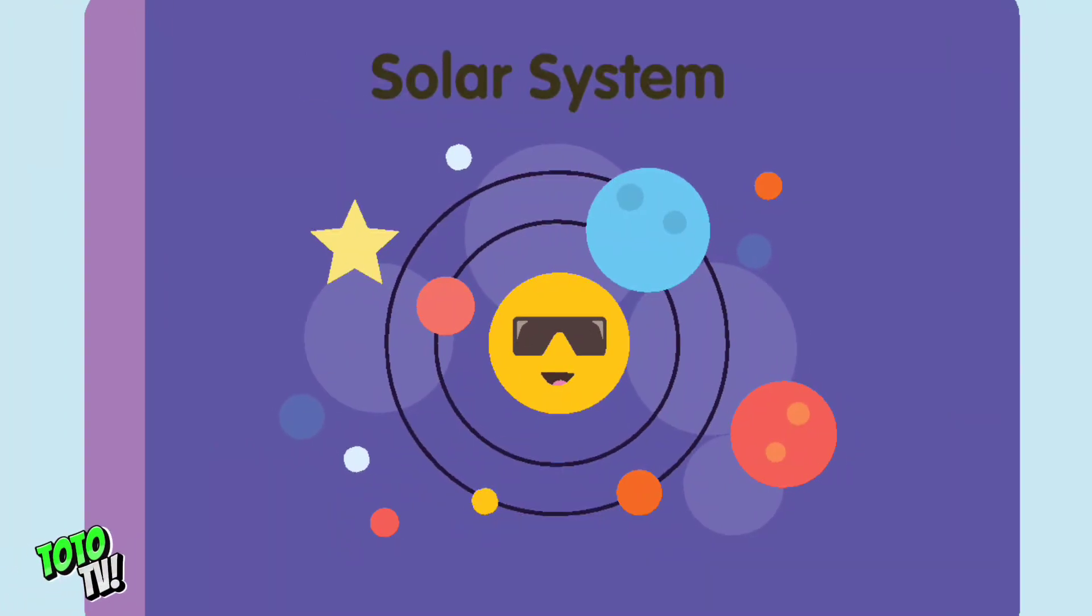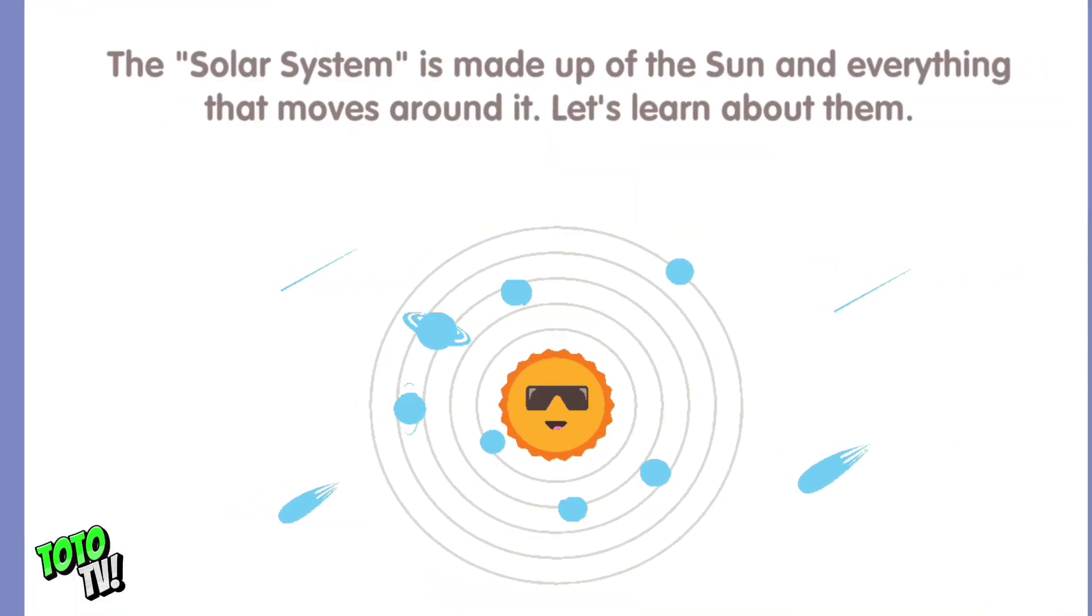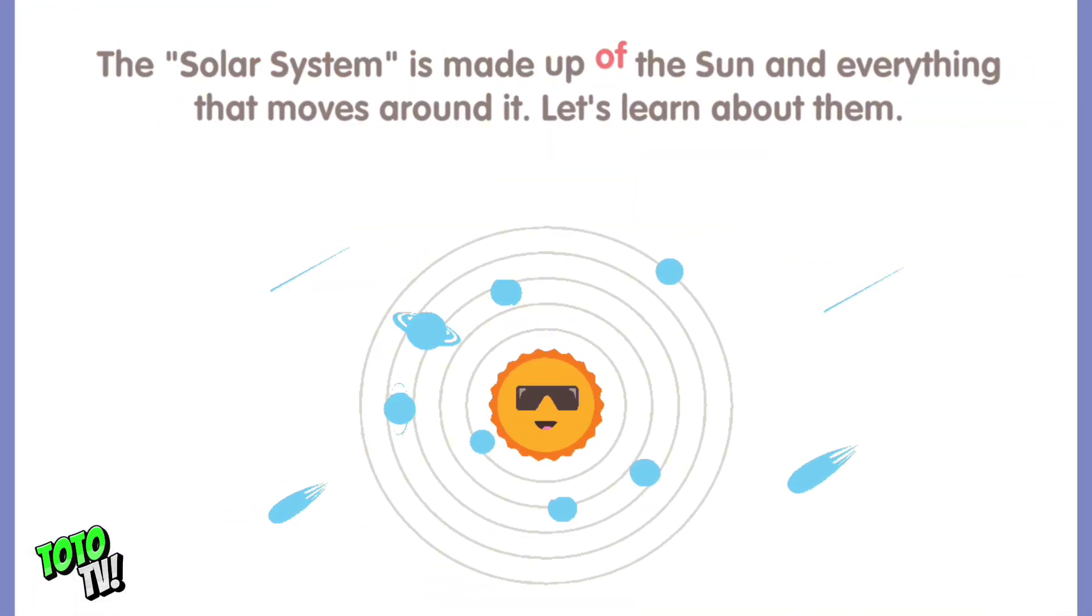Solar System. The solar system is made up of the Sun and everything that moves around it. Let's learn about them.